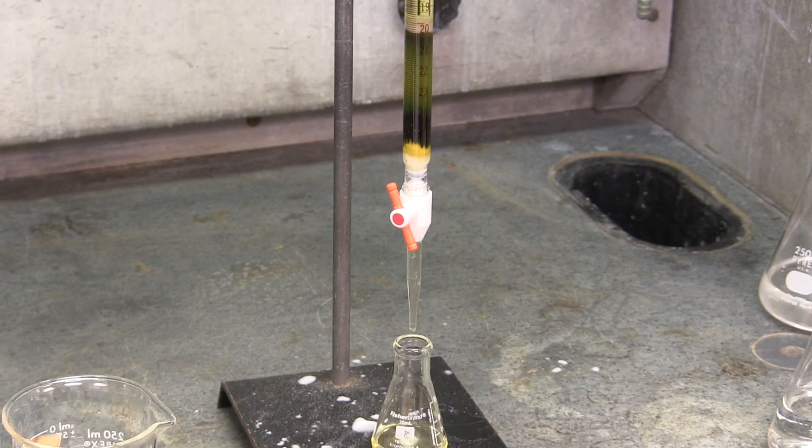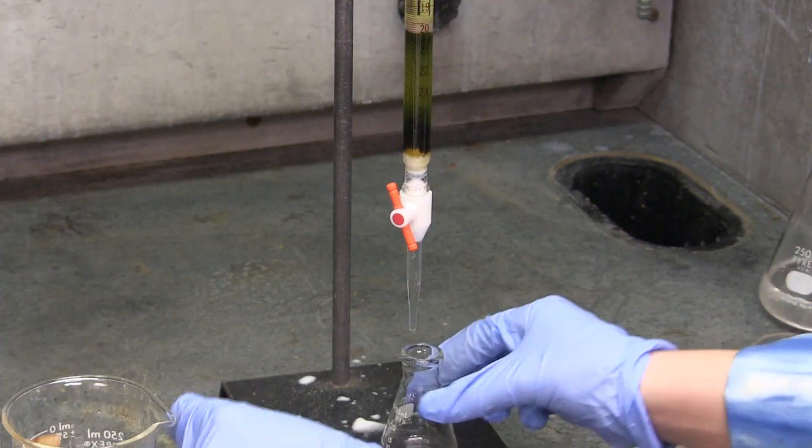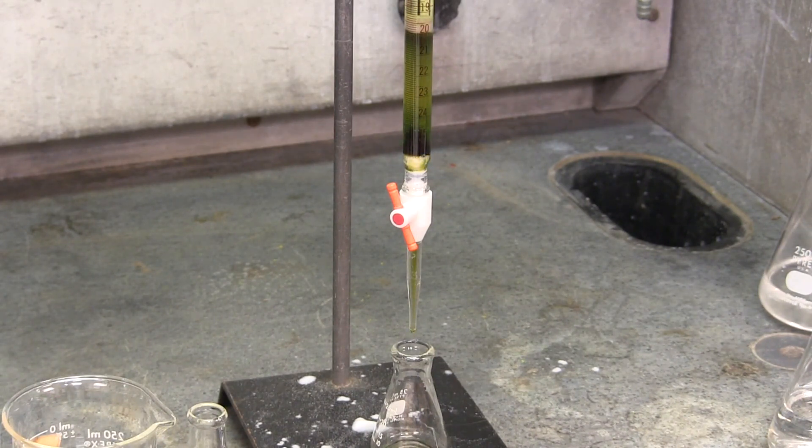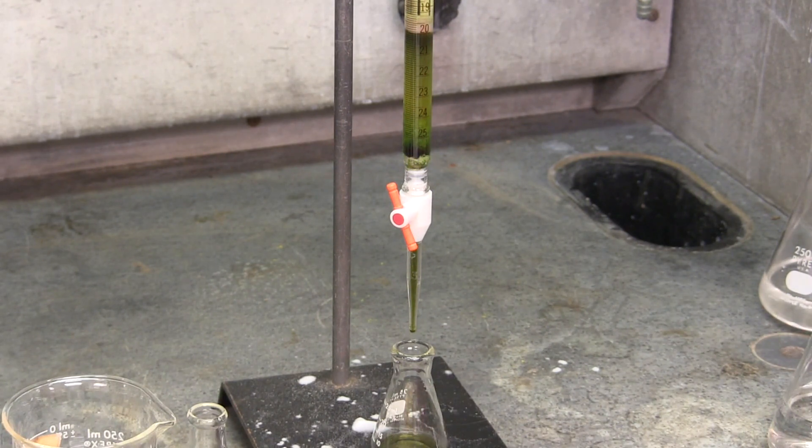As the yellow band approaches the end of the burette, you may switch Erlenmeyer flasks to collect the transitions between the bands. The next fraction collected in a new Erlenmeyer flask is the dark green band.